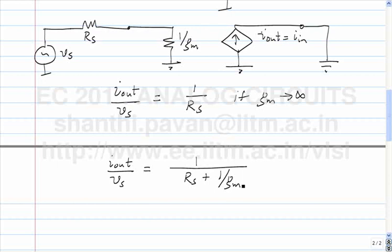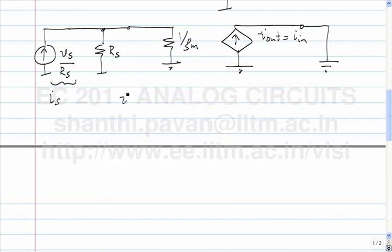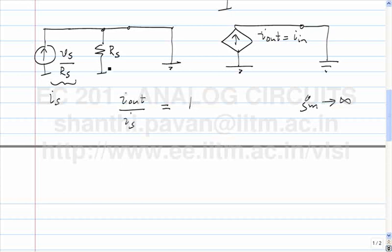Another way of looking at the same thing is to draw a Thevenin equivalent: this becomes an incremental current source of V_s/R_s, and the source resistance becomes R_s. Calling this I_s, I_out by I_s: if gm is infinity, what happens to I_out/I_s? It equals 1. Why? Both terminals of R_s are sitting at ground, so no current can flow through it. All of V_s/R_s actually flows into the transistor and flows out.